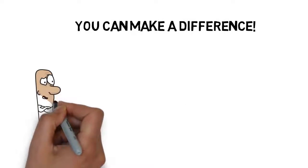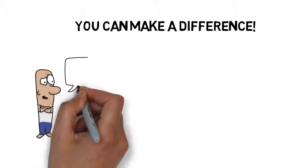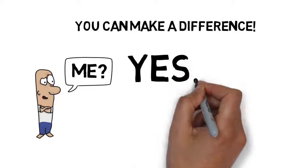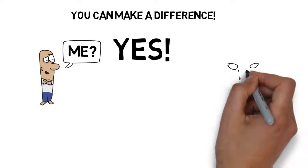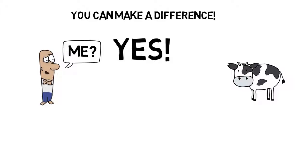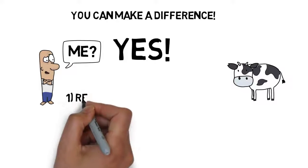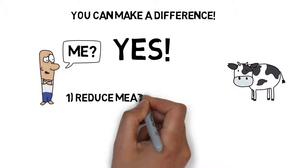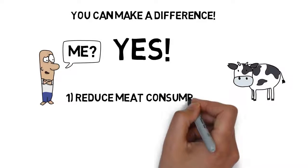I will ask you to do three very simple things. First, you need to know that animal agriculture is a big contributor to climate change. So reducing your meat consumption is the first and easiest thing you can do.